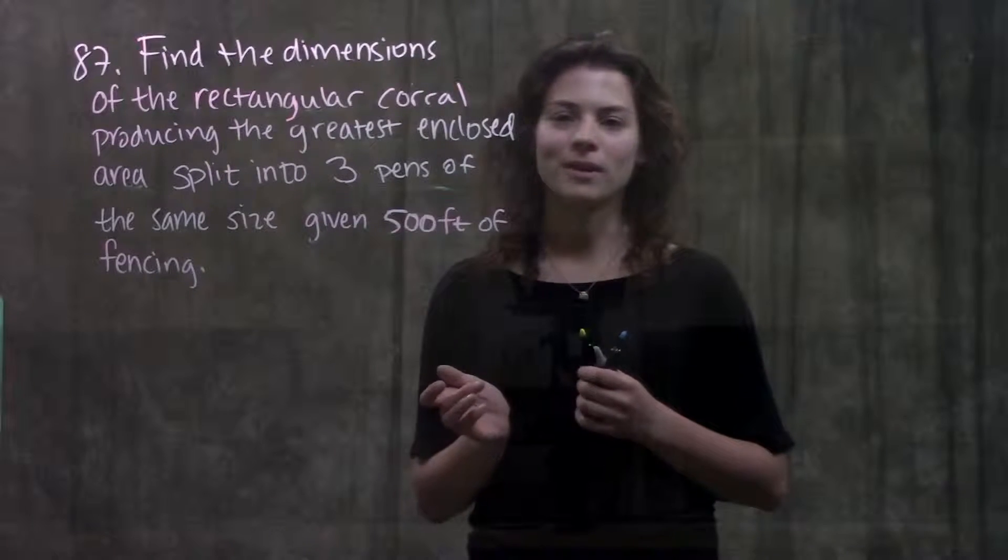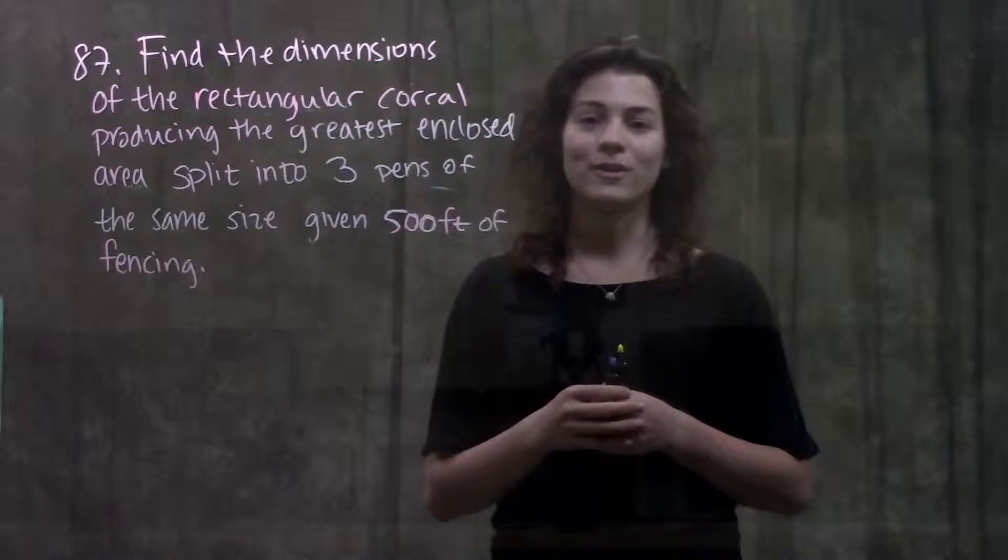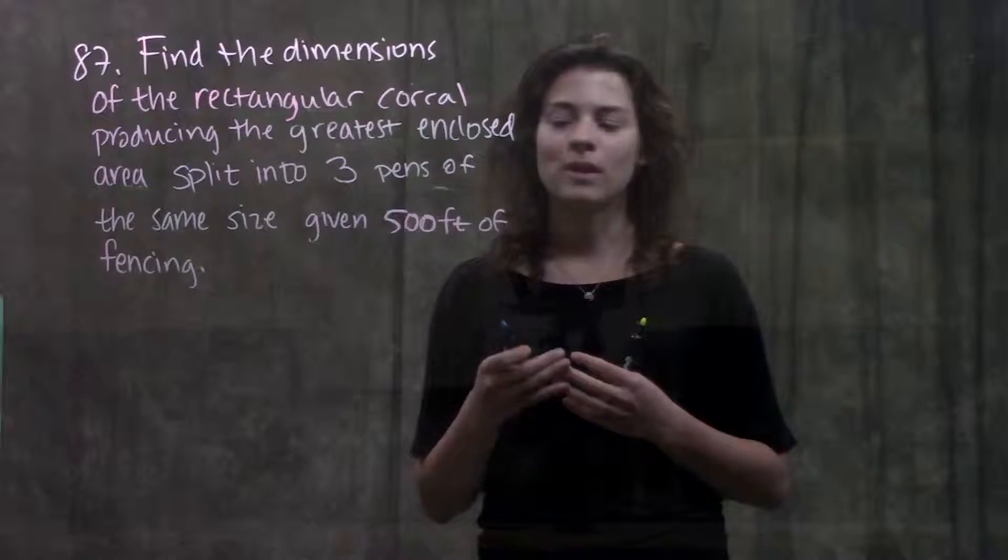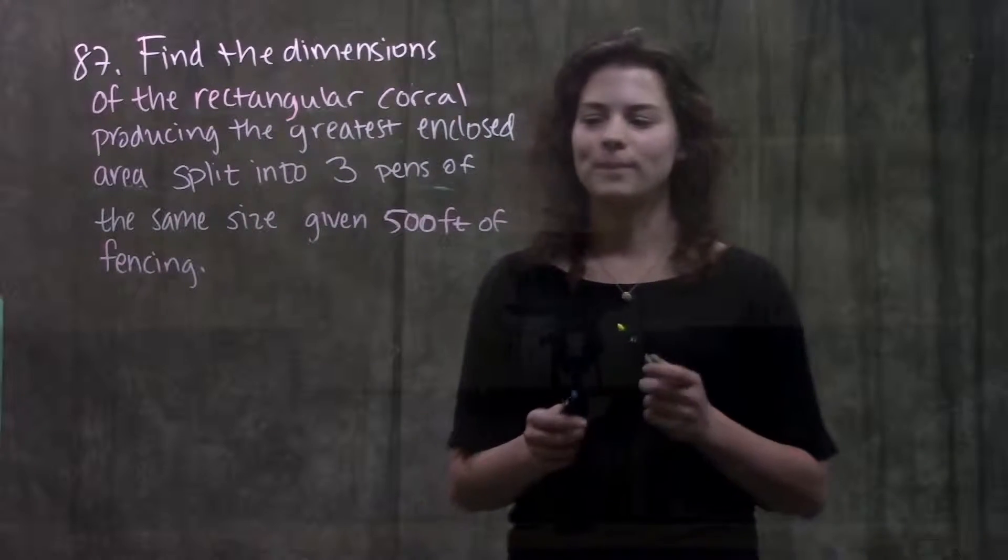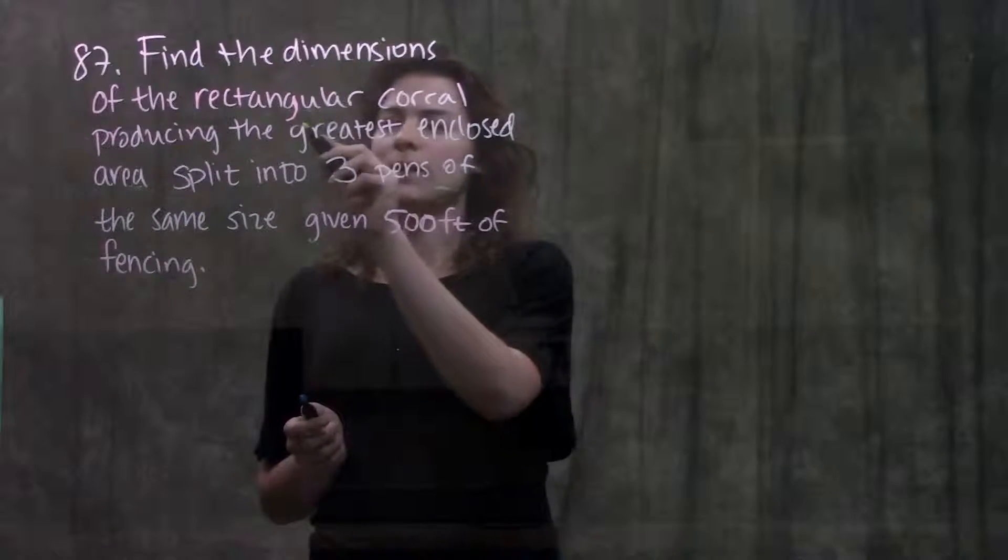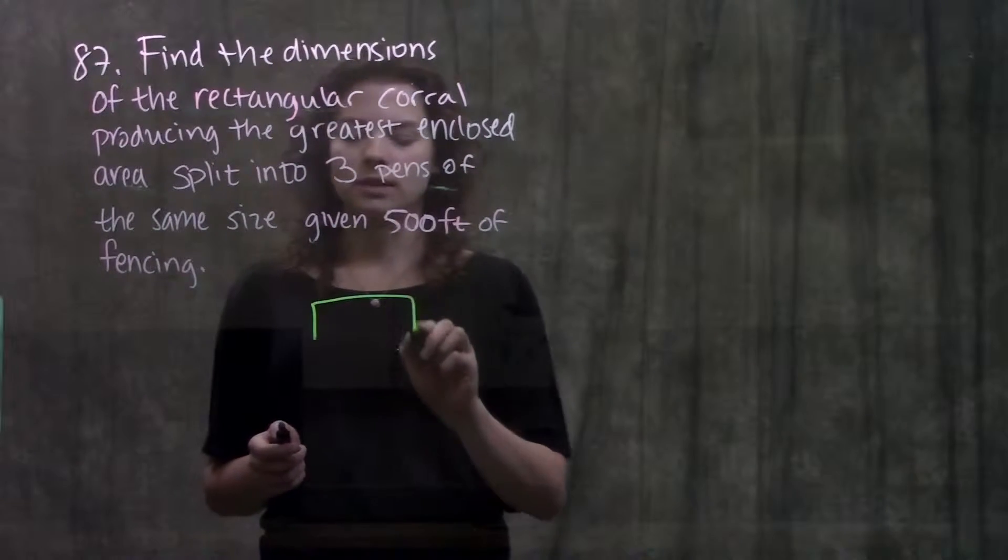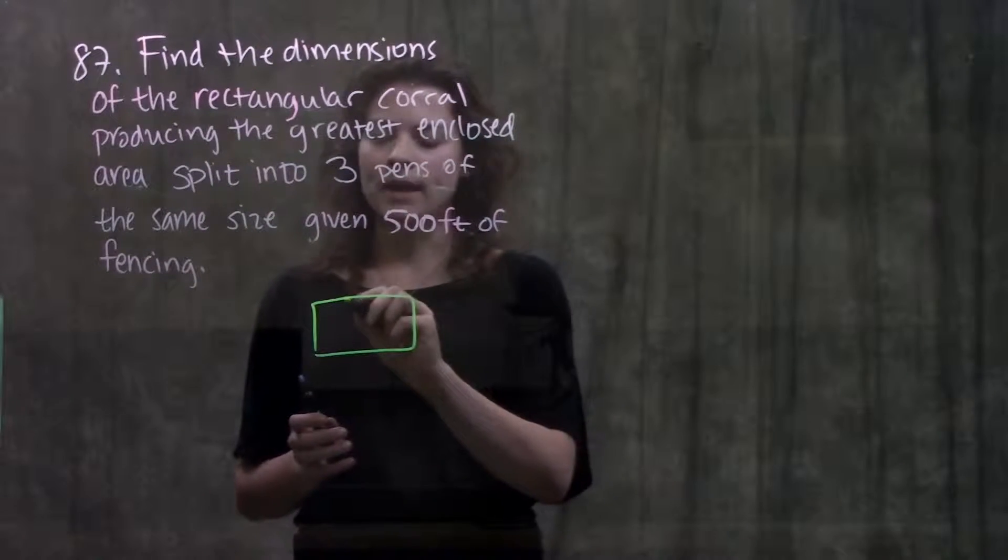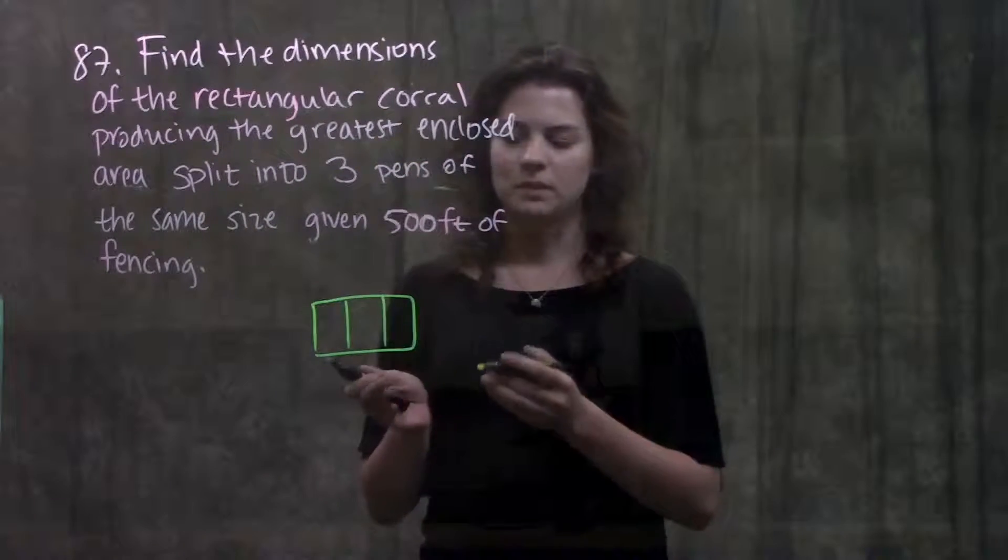Alright so there's a whole lot going on this problem so the first thing we're going to do is just draw out everything that they're telling us so we can visualize it. So they tell us that we have a rectangular corral so something like this and they also tell us that it's split into three pens of the same size so something like that.